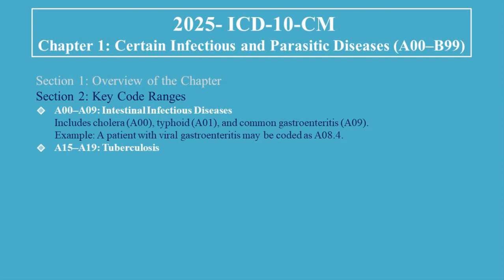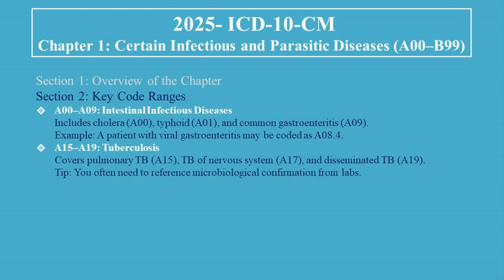A15 to A19 covers Tuberculosis, including Pulmonary TB (A15), TB of the Nervous System (A17), and Disseminated TB (A19). Tip: you often need to reference microbiological confirmation from labs.